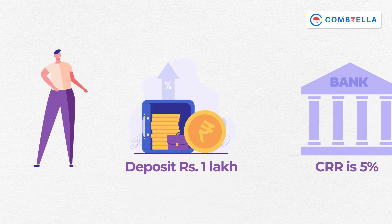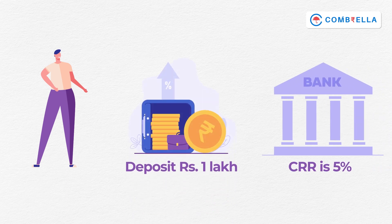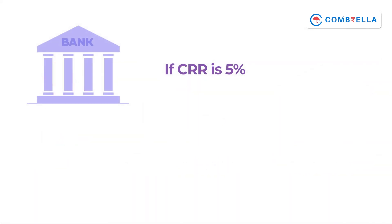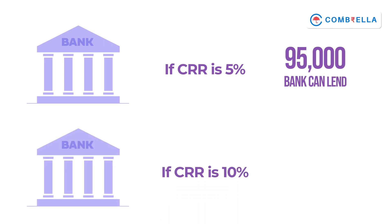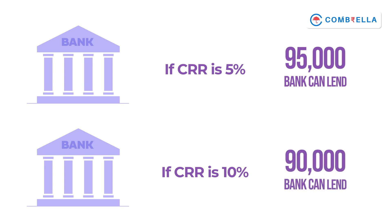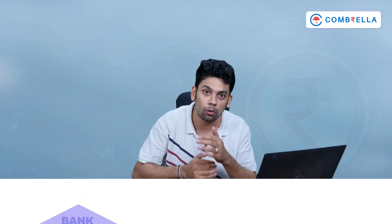Let's say you deposit 1 lakh rupees in your bank account. And the CRR set by the RBI to the banks is 5%. So bank can now lend only 95,000 rupees as loans to others. Now, during inflation, RBI will increase the CRR, say for example from 5% to 10%. Now the bank can lend only 90,000 rupees as loan instead of 95,000. So due to lower lending capacity, the money supply will reduce in the economy.